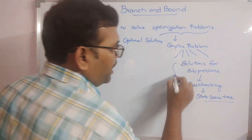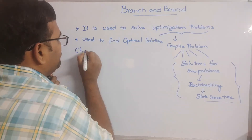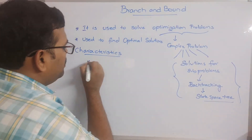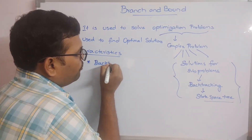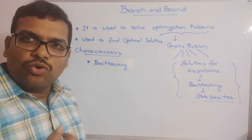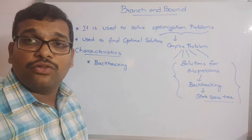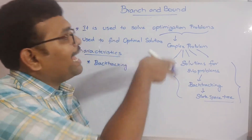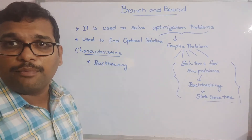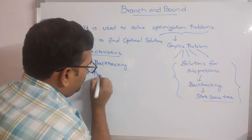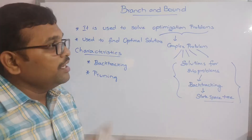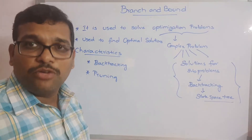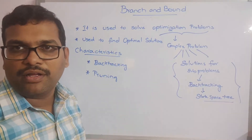Now, what are the characteristics of Branch and Bound? The first one is backtracking — we start with one node, expand it, and while expanding, if it doesn't lead to a feasible solution, we backtrack to the previous node and go with the alternate path. The second characteristic is pruning — pruning means ignoring non-feasible solutions while creating the path.